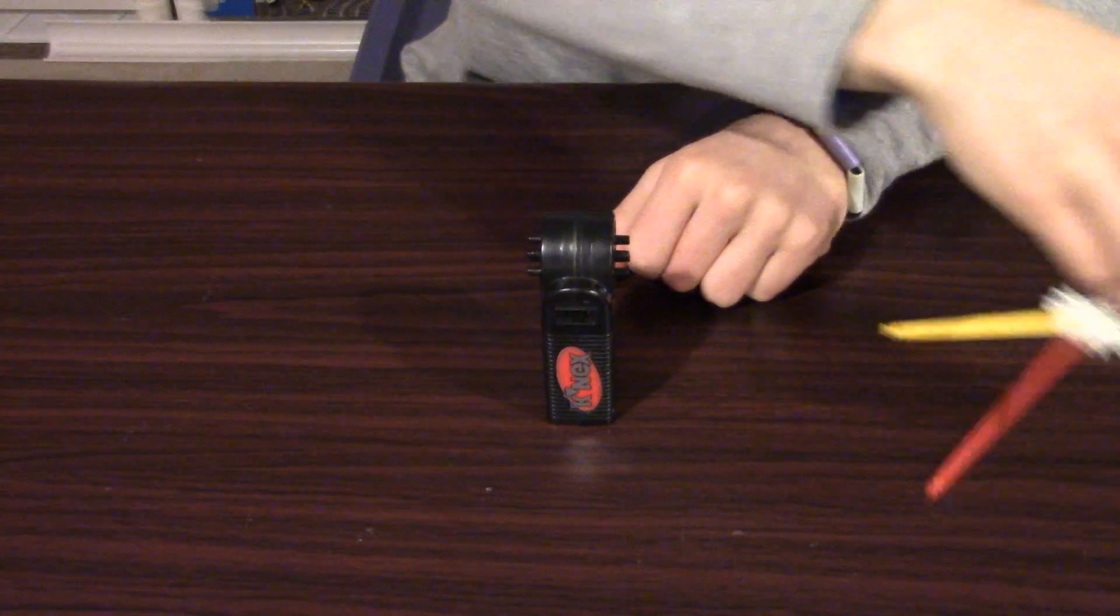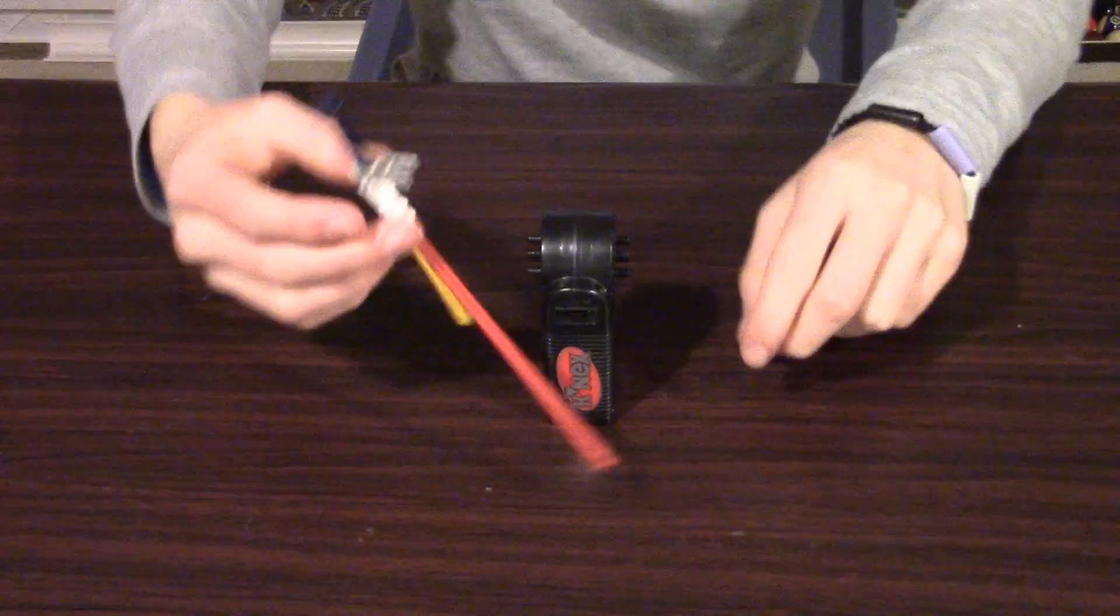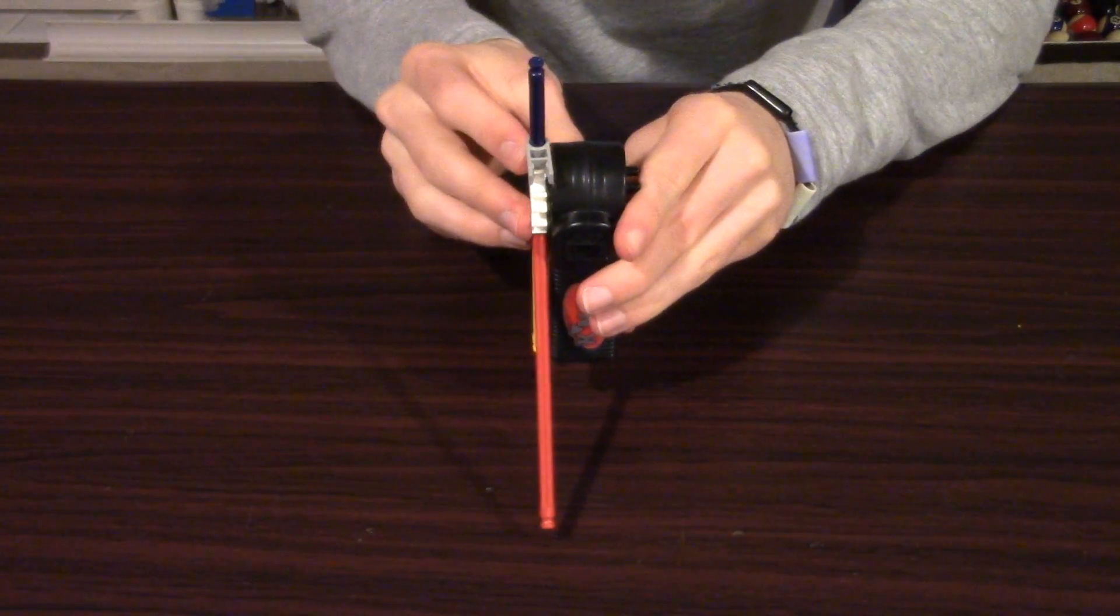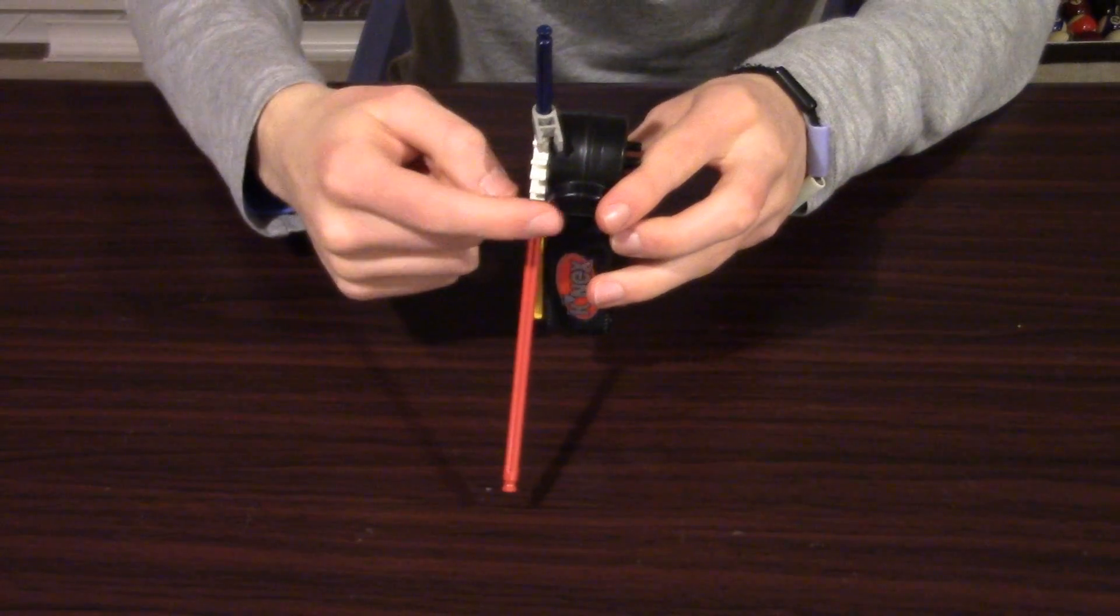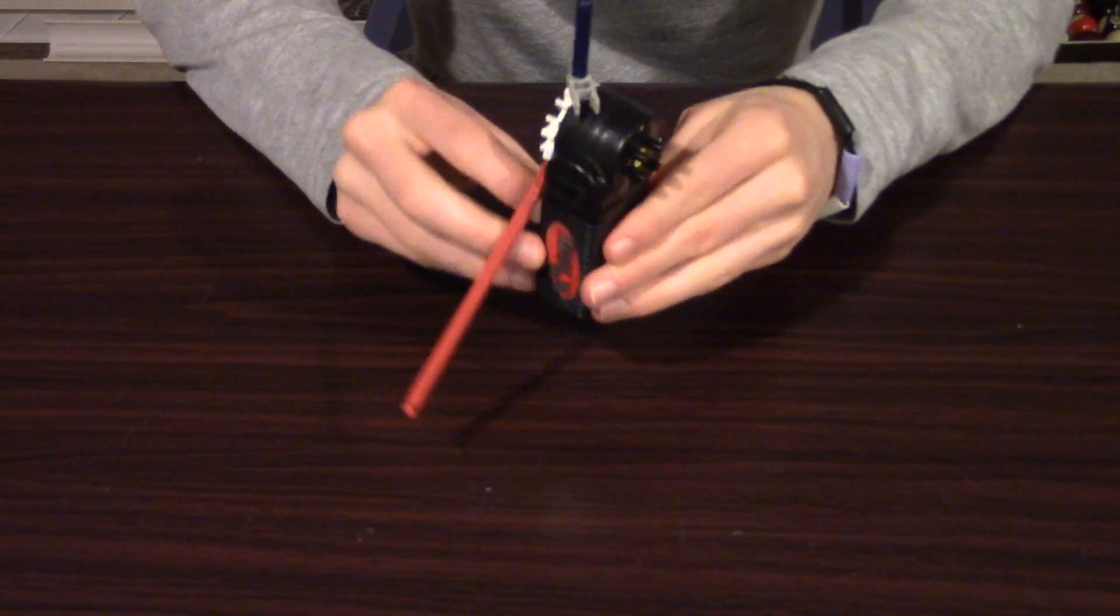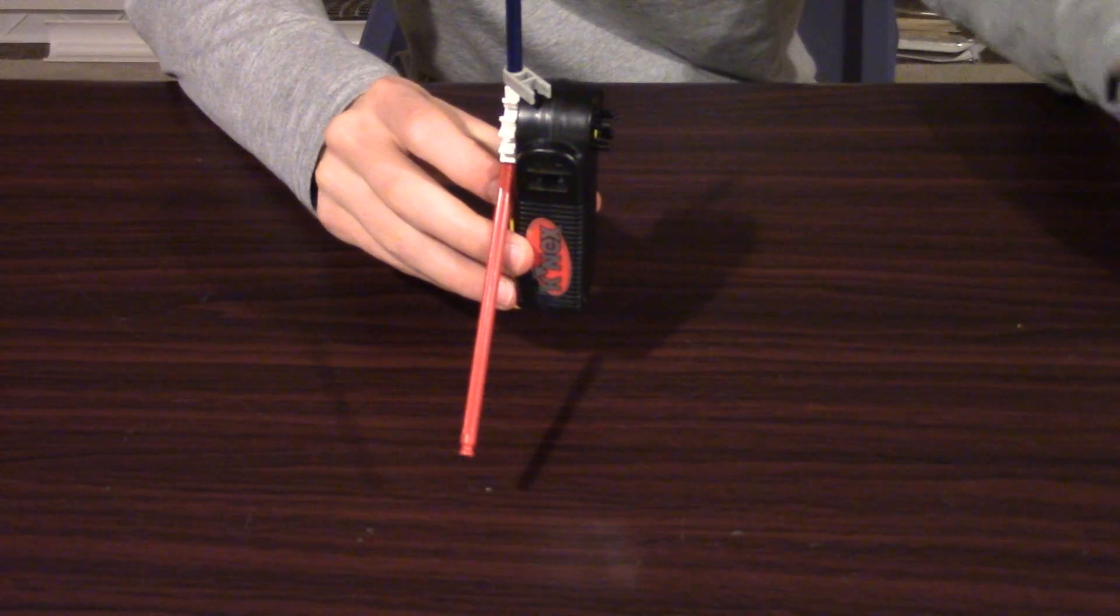Then we're going to grab these two pieces, and we're going to place them just like this, with the red rod facing diagonally and towards the switch. So just like this, and then we're going to do the same thing on the other side.